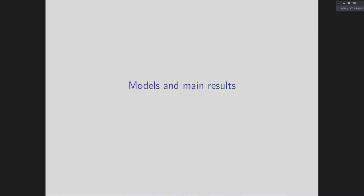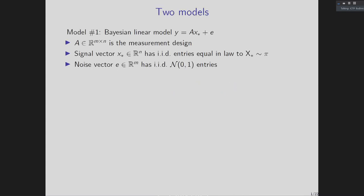This talk is going to be about two main models — quite standard models. I'm not going to say too much by way of motivation. I'll start by telling you what the models are and what results we were able to prove, and then hopefully go into some of the high-level ideas of how we do the proofs. The first motivating model we were primarily interested in is this very classical Bayesian linear model.